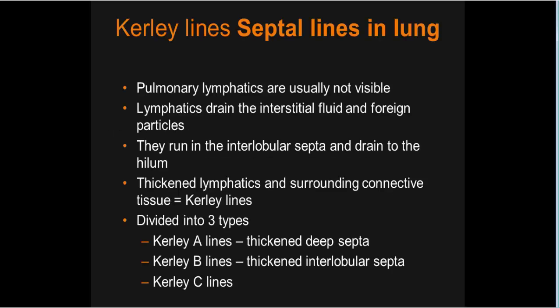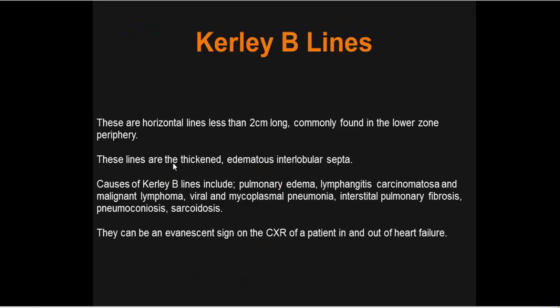Kerley lines: pulmonary lymphatics are usually not visible, but when thickened with interstitial fluid or foreign particles running in the interlobular septa and draining to the hilum, they become visible. Kerley lines are divided into three types. Kerley A lines represent thickening of the deep septa. Kerley B lines are horizontal lines less than two centimeters long, commonly found in the lower zone peripherally, representing thickened edematous interlobular septa.